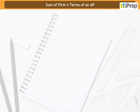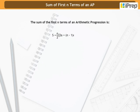Sum of the first n terms of an AP. The sum of the first n terms of an arithmetic progression is S equals n by 2 into 2A plus n minus 1 into D.